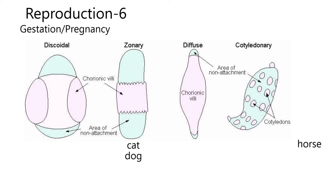The horse has diffuse attachment, which basically means most of the placenta has little fingers that attach to the uterus. The placenta is where the fetus gets its nutrients from the mother. There's no crossing of blood — the two blood supplies of the fetus and the mother are very close, and by diffusion, many things get transported back and forth.